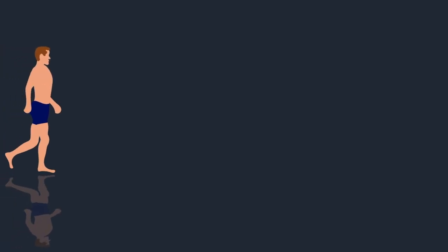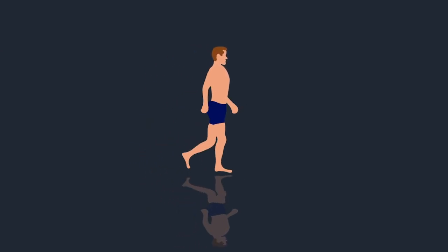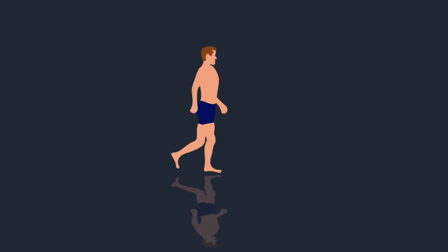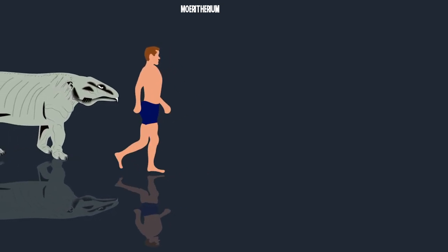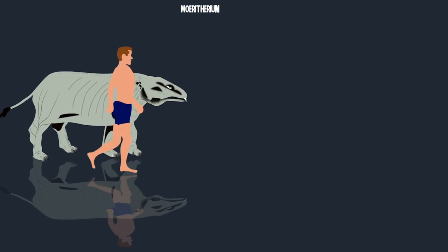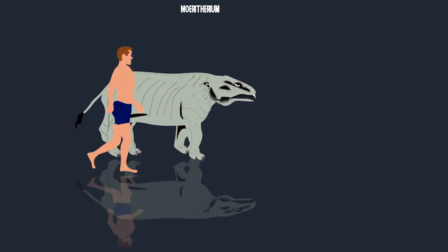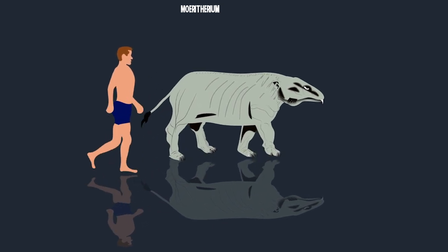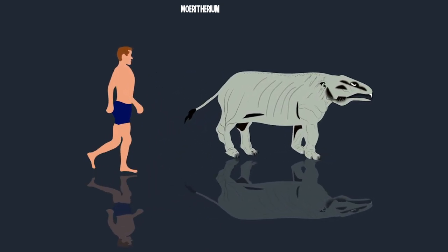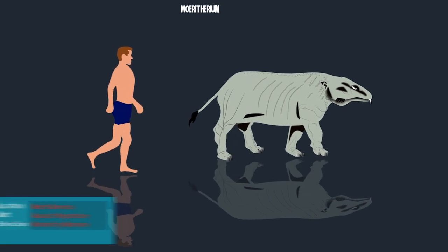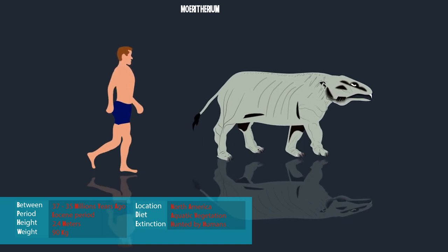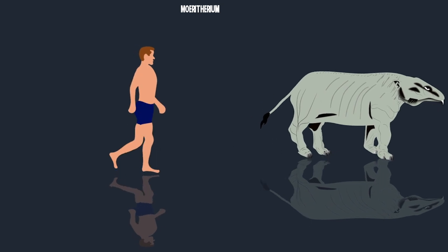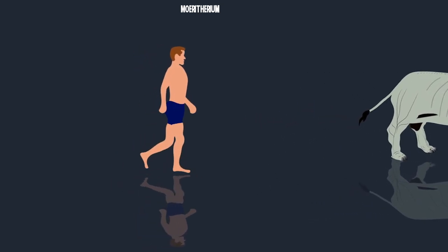We will do a size comparison with a six-foot human so that you understand the height of the prehistoric animals. Moeritherium is a genus of animals that are ancestors of elephants. They existed in North Africa and lived during the Eocene period, 37 to 35 million years ago. They were about 2.4 meters long and weighed about 90 kilograms. The shape of their skull suggests that while Moeritherium did not have an elephant-like trunk, it may have had a broad flexible upper lip like a tapir's for grasping aquatic vegetation.